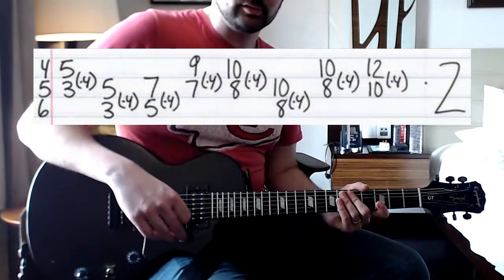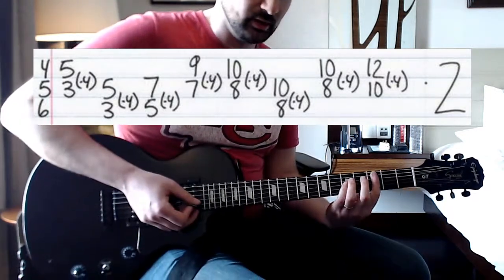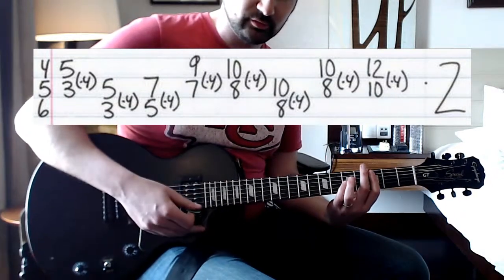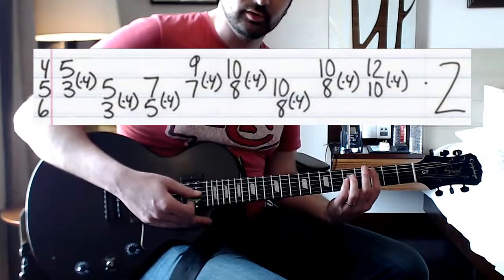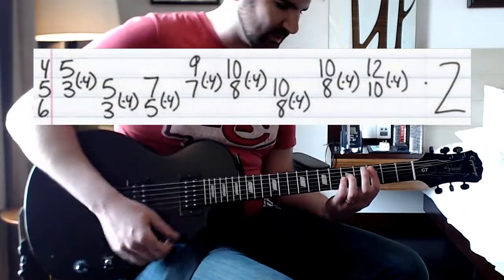Now the second riff is going to be power chords. So I'm going to play all down strokes, and it's going to be four notes per chord.